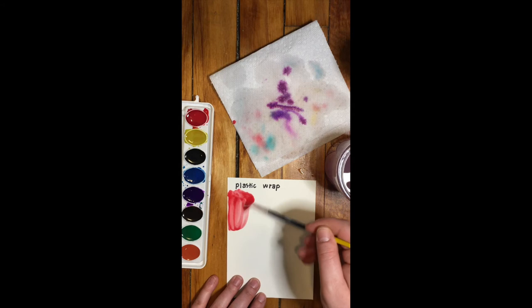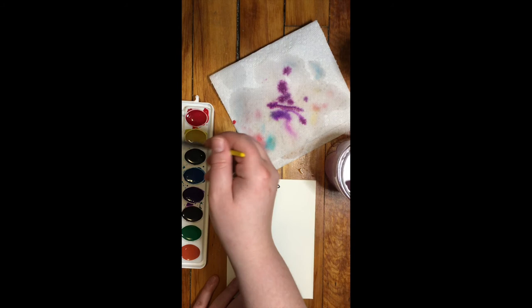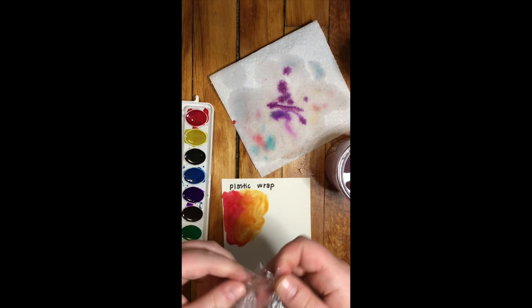All right, next is our plastic wrap technique. And similar to some of the techniques that we just did, we want to have our paint be very wet. So make sure that you have your plastic wrap ready so when you put your paint down, you will be ready to put the plastic wrap onto it.